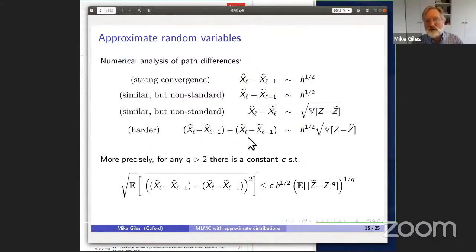The one that was harder was the four-way difference. For that four-way sort of cross difference, that scales approximately as the product of these things - the square root of the time step times the square root of the variance. For those familiar with multi-index Monte Carlo, that's what you would hope to get, that product representation for the error. More precisely, what the theorem proves is that for any q greater than 2, the root mean square value of that four-way difference is bounded by a constant times the square root of the time step times the qth moment of the difference between z and z tilde to the power one over q.